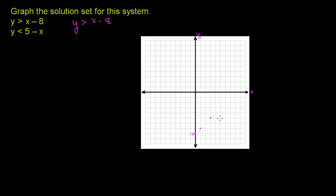If you move 2 in the x direction, you get 2 in the positive y direction. If you move 3, you go up 3 in the positive y direction. Likewise, if you go in the negative x direction, you also go in the negative y direction by 1. So y equals x minus 8 would be a line just like that, but since we're not going to include it — we have to be strictly greater than that line — I'll do a dotted line. For any x, the y is going to be all the values greater than x minus 8.